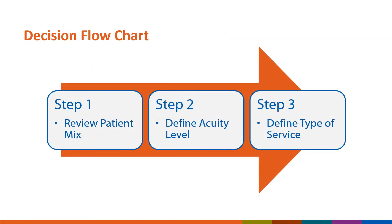This is a decision flowchart to outline the steps to define and map locations in NHSN. We will walk through each step in the following slides. Step one is to review the patient mix, step two is to define the acuity level, and step three is to define the type of service.